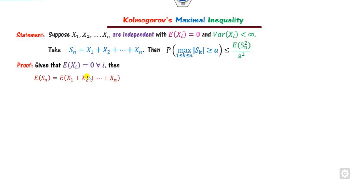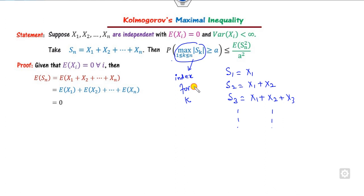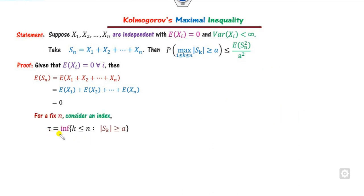We start with E[S_n]. Since each X_i has mean zero, E[S_n] = 0. Now we need to look at the index k for which this inequality holds, since k varies from 1 to n. We define the index τ as the infimum of all k less than or equal to n such that S_k ≥ a. We define events A_i where A_i is the event that S_i > a.